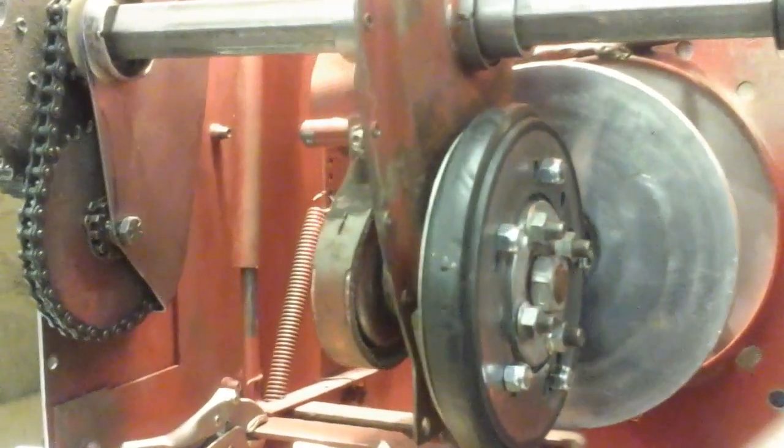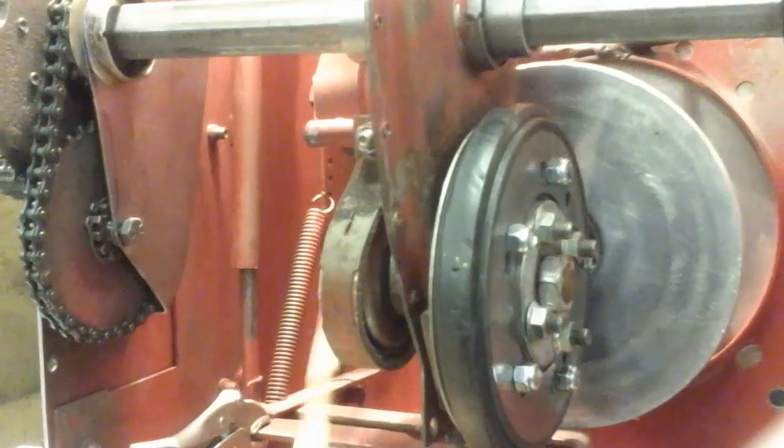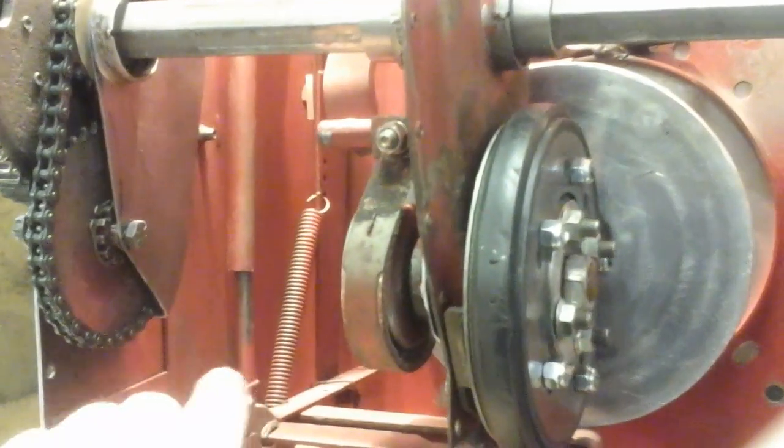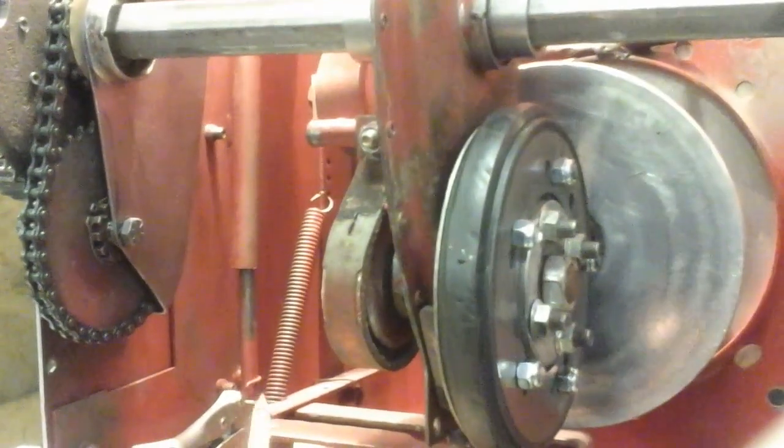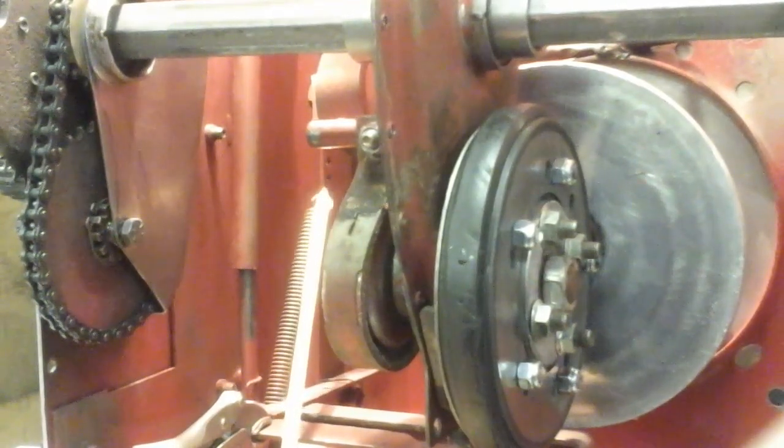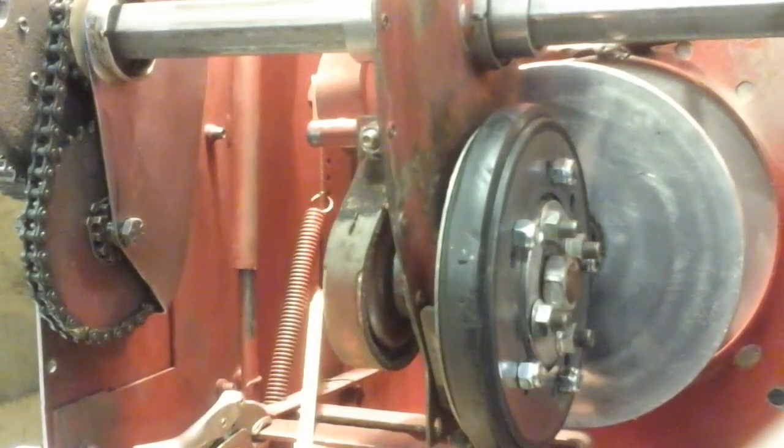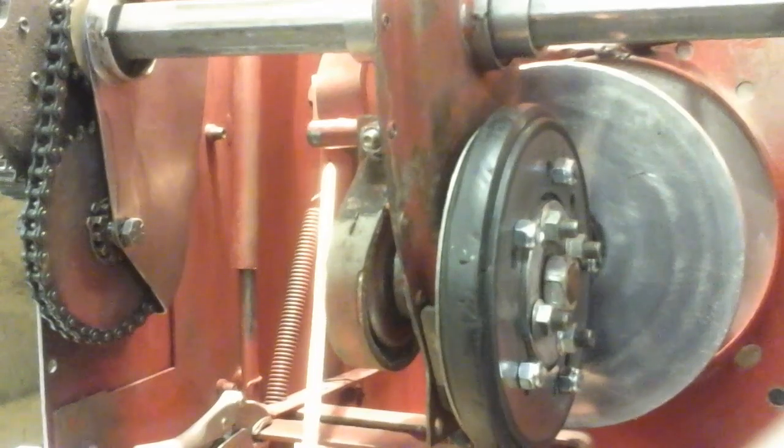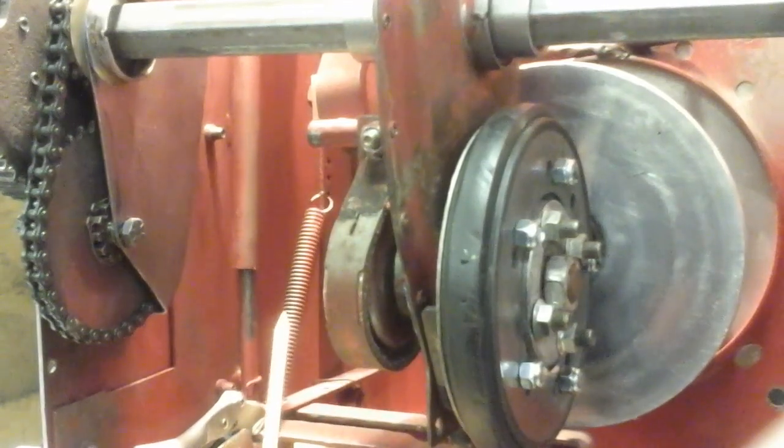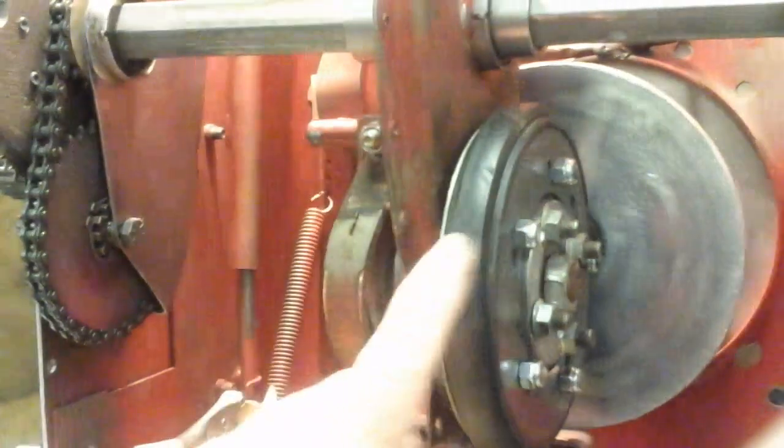Another thing you can do to make your clutch work a little better is this spring is what pulls your clutch in and out when you let your clutch out. You can see this spring is in the first hole. Some machines only have two, some have three. Well you can take this bar out and you can drill that third hole if you don't have one. Moving that spring up to there is going to give you more power pushing against the clutch against the drive disk. That's going to help you.